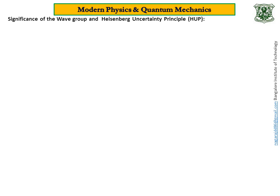This is my second video on modern physics and quantum mechanics. In my first video I explained historical developments which led to the birth of modern physics and quantum mechanics. We also discussed in detail Planck's quantum theory of radiation, dual nature of light, concept of matter waves, properties of matter waves, and phase velocity and group velocity. Now let me proceed further.